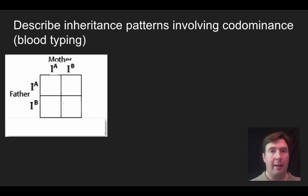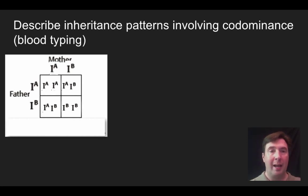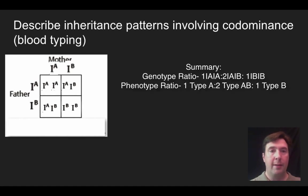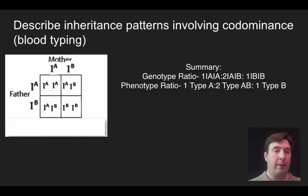Hopefully you set your Punnett square up with the mother on top — type A and type B — and the father on the side, also type A and type B. One of the four offspring is going to be homozygous dominant type A, one will be homozygous type B, and the other two will be type AB. This is codominance because when A and B are both present, they're both expressed — both dominant. Expressed when present is our definition for dominance. It's still a blending like incomplete dominance, but a different type of blending.